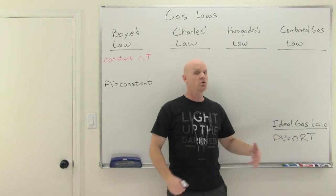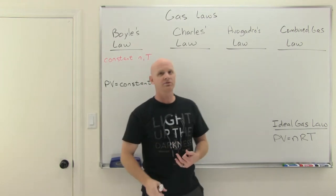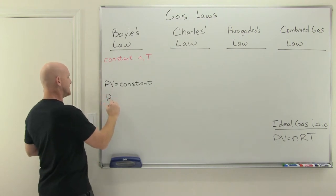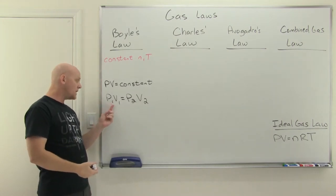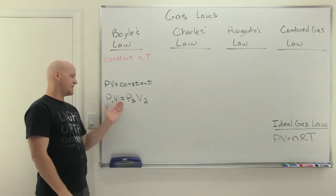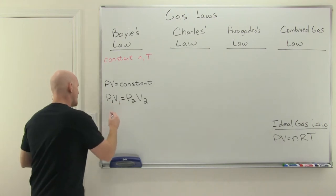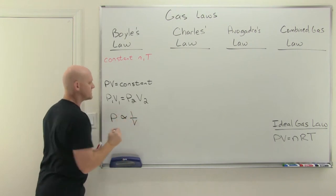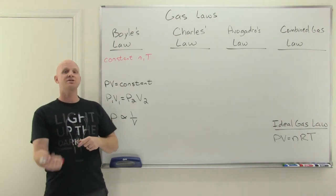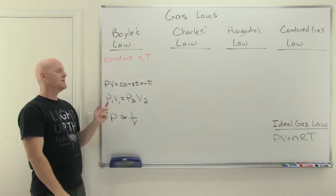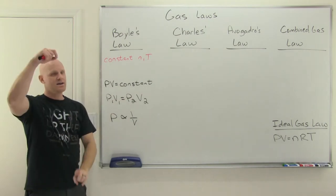Mr. Boyle didn't actually have the ideal gas law to work with — it hadn't been discovered yet, so he had the first piece of the puzzle. Another way to express this is P1V1 equals P2V2. If pressure times volume is a constant, it's going to equal the same constant under one set of conditions and under a second set of conditions, so they must be equal to each other. Finally, you could say that pressure is proportional to one over volume — pressure is inversely proportional to volume. As pressure goes up, volume goes down. They're inversely proportional: as one goes up, the other goes down.